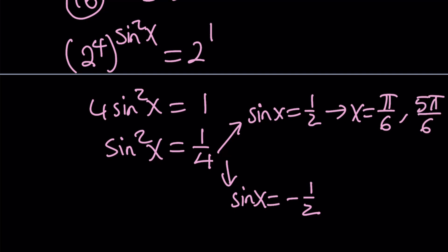If sine x is negative 1/2, then x can be 7π/6. And you can subtract this from π, which gives you negative π/6, which is the same thing as 11π/6.